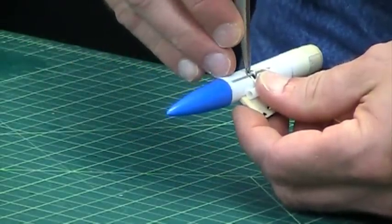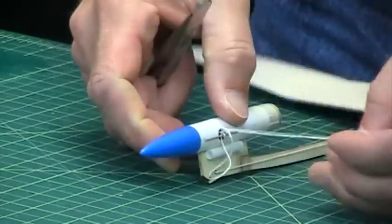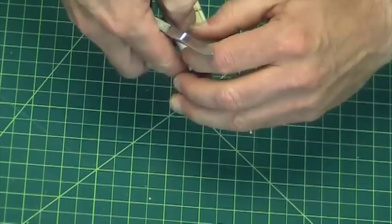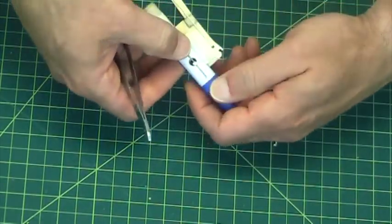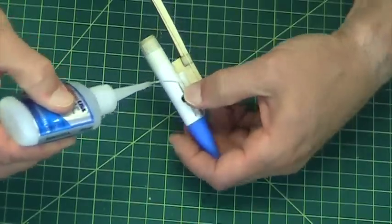There are tweezers to help me. There we go. Oops, pulled off. Pulled my Kevlar off, so I'll just put another drop of CA glue right there.